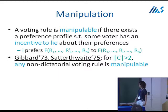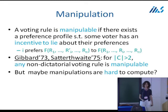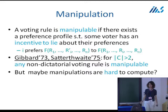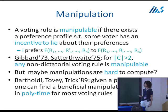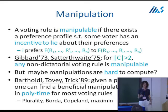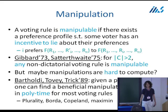The next hope, wearing our computer scientist hats: perhaps these manipulations would be really hard to compute, meaning that in practical situations manipulators would have a hard time figuring out lying strategies. But unfortunately even that hope is crushed. This was shown by Bartholdi, Tovey, and Trick in '89. What they showed is that given a preference profile, one can find a beneficial manipulation - solve the manipulation problem and find this R'_i - in polynomial time for most voting rules. In particular, this applies to all voting rules just defined: plurality, Borda, and more generally all scoring rules, as well as Copeland and Maximin.